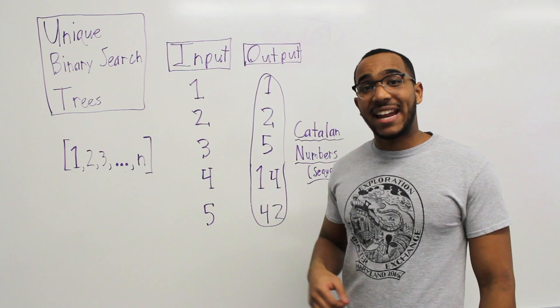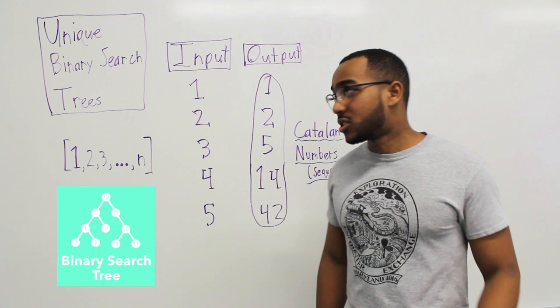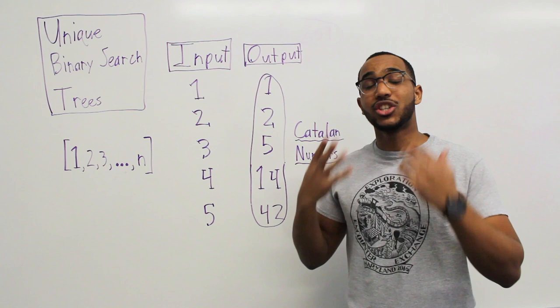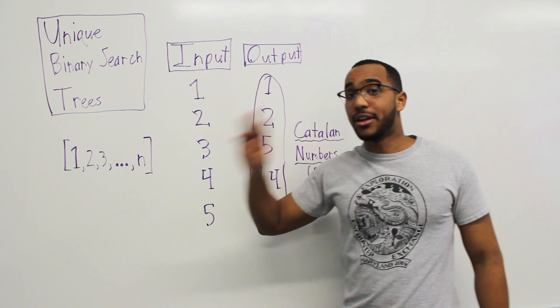Today's question investigates: when we're given a number n, how many structurally unique binary search trees can we construct from the set of numbers 1 to n? So if n is 3, I'm only going to get the numbers 1, 2, and 3. How many structurally unique binary search trees can I create with the numbers 1, 2, and 3?